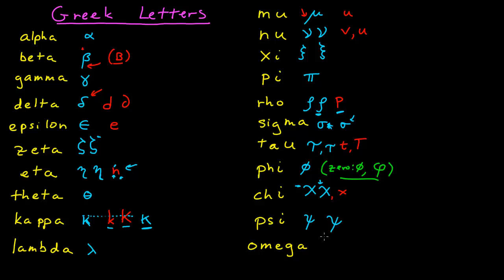Psi takes a little practice to get right — I start with a little curve on top, then a lower curve, and then a slash through it. And finally, omega is a problem, obviously, with the w. I've actually changed my handwriting in this regard. I keep my Roman w's with sharp corners on the bottom, and rounded corners for my omega.